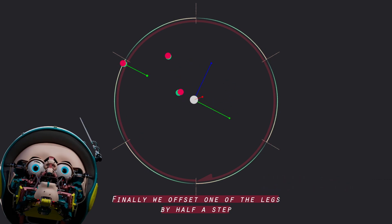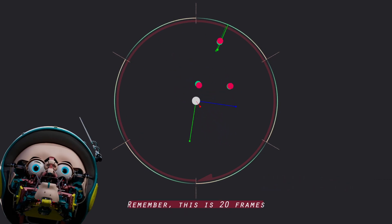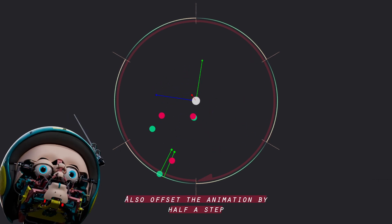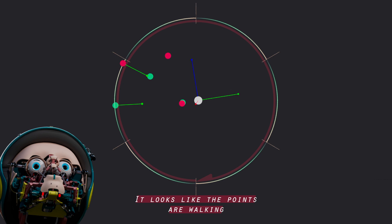Finally we offset one of the legs by half a step. Remember, this is 20 frames. Also offset the animation by half a step. It looks like the points are walking.